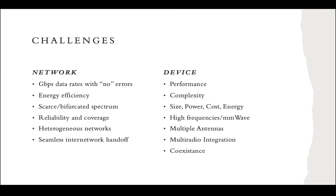There are also challenges for future wireless communication, viewed from two aspects: network and devices. For network challenges, the first is achieving gigabits-per-second data rates with no errors, since high efficiency requires higher data rates with fewer error percentages. The second is energy efficiency — people nowadays often use more than one telecommunication device, such as phones, laptops, and tablets, so the challenge is making things more efficient without wasting energy.